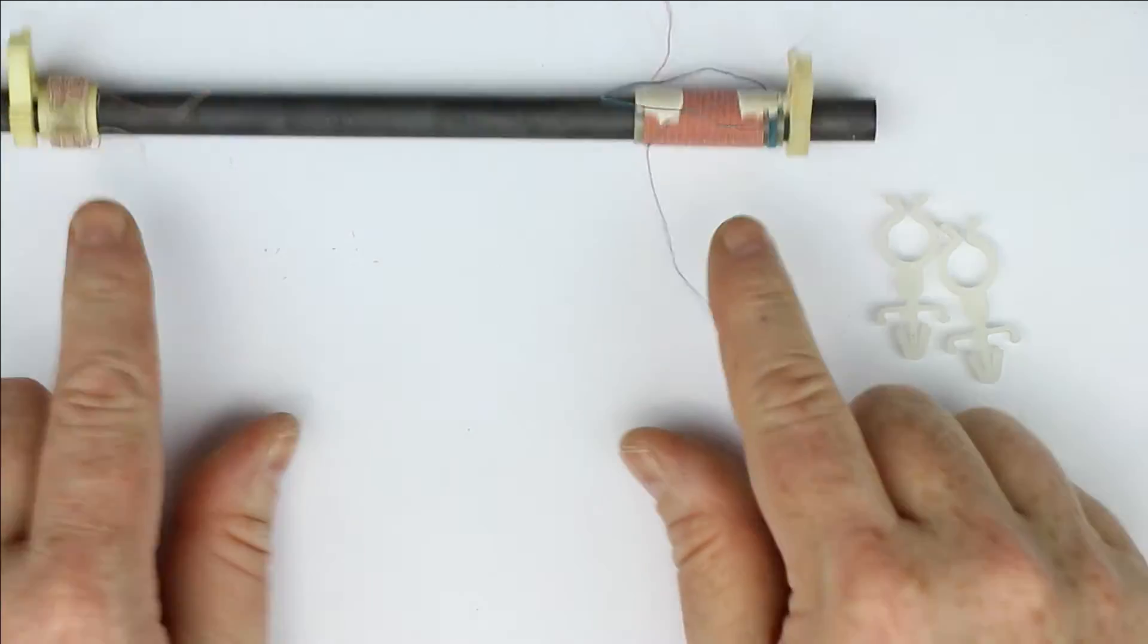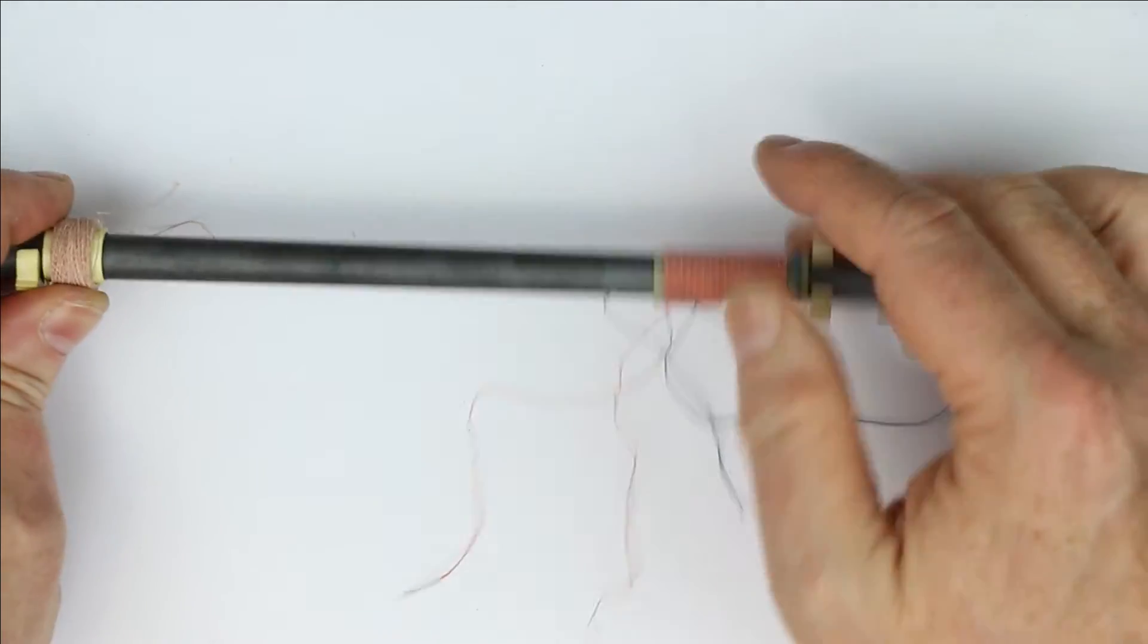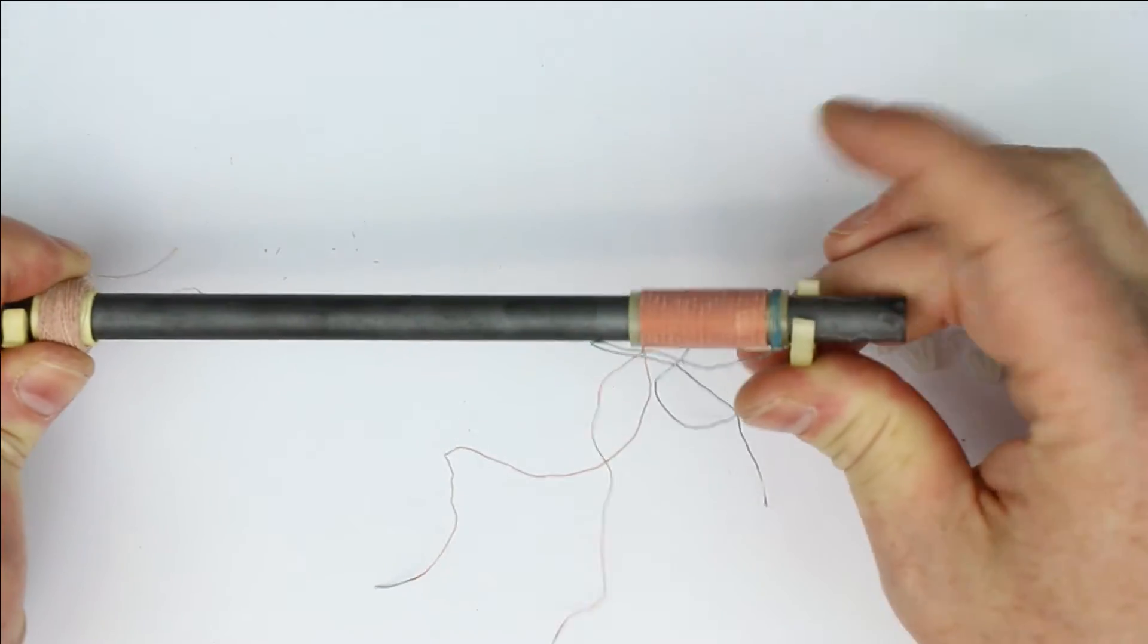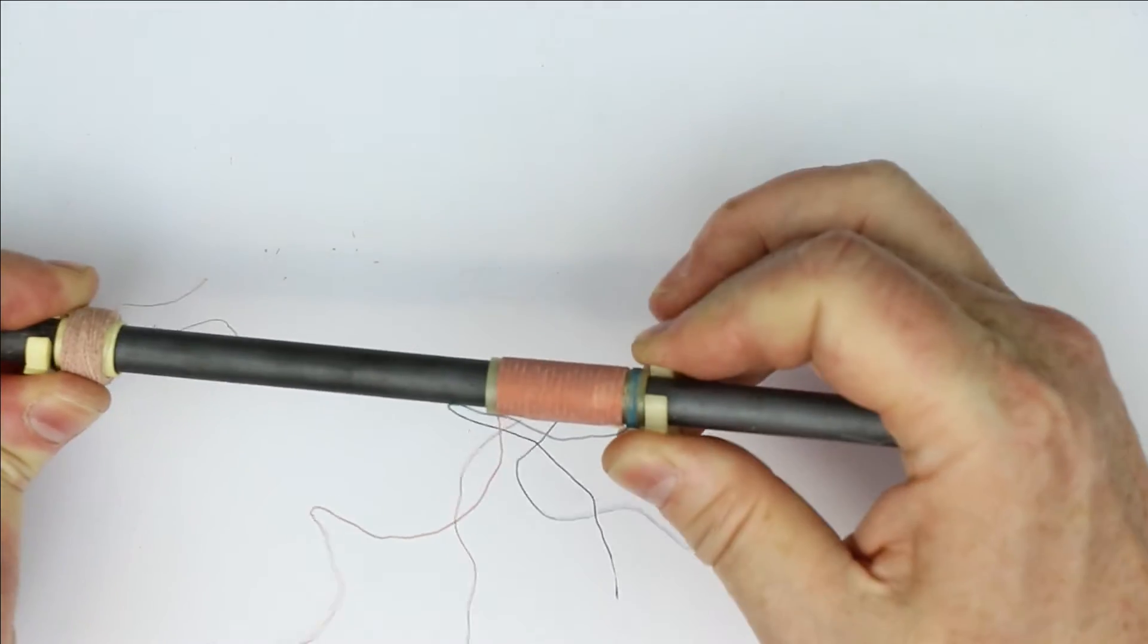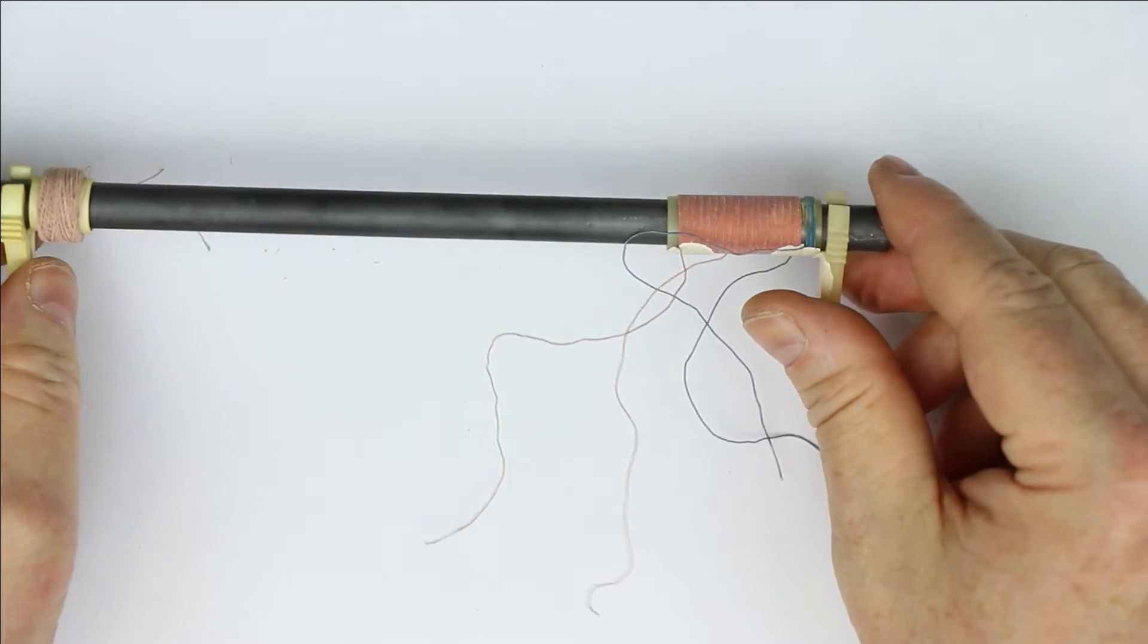You can change the inductance to some degree by shifting it more to the middle or more to the edge.